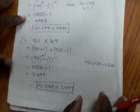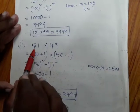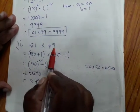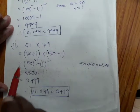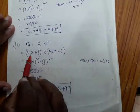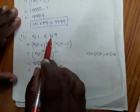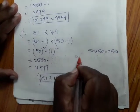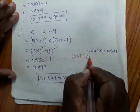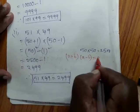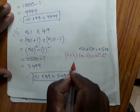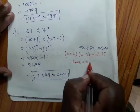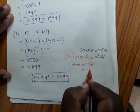Now one more sum. 51 into 49. For better understanding, do one more sum. 51 can be split into 50 plus 1 and 49 can be split into 50 minus 1. Same formula here also. A plus B into A minus B is equal to A square minus B square. Here A equals 50, B equals 1.